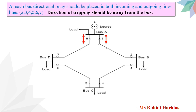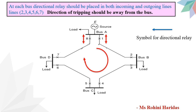Rule number 2: at each bus, the directional relay or reverse power relay should be placed on both incoming and outgoing lines, and the direction of tripping should be away from the bus. This is the symbol for the directional relay. Assuming we go in the clockwise direction: at bus B, relay 2 is incoming and relay 3 is outgoing — both should have directional relays. At bus C, relay 4 is incoming and relay 5 is outgoing. At bus D, relay 6 is incoming and relay 7 is outgoing.